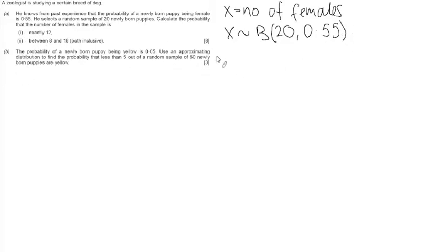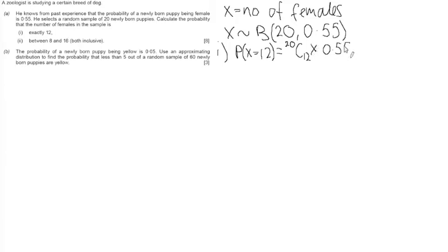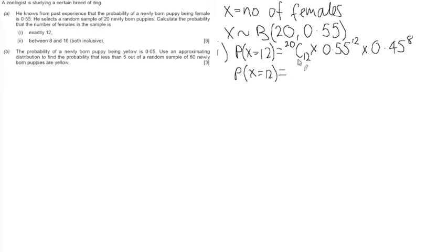Part A(i): find the probability that there are exactly 12 females. I like to use the formula for the binomial when we're using exact figures rather than taking two readings from the table. This means we calculate 20 choose 12, multiplied by the probability of a female being born to the power of 12, multiplied by the probability of a male being born to the power of 8. Putting this into our calculator, the probability of there being exactly 12 females is 0.162, to three decimal places.